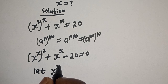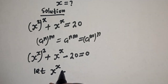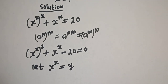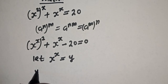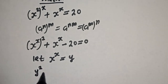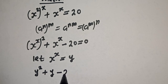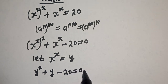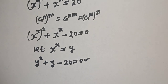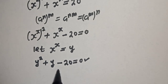Now let s raised to power s equal y. Then we have y squared plus y minus 20 is equal to zero. This is a quadratic equation, so let's solve it using the factorization method.